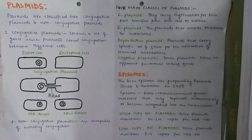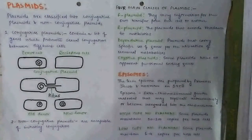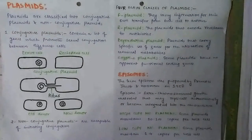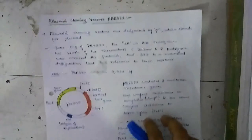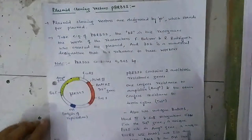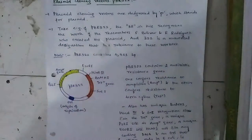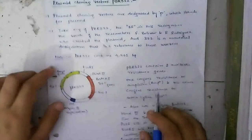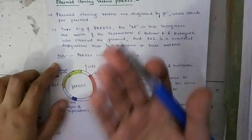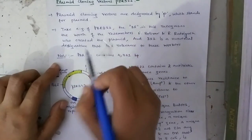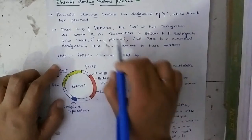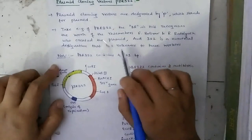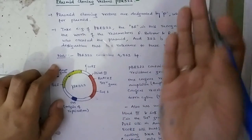The two commonly used plasmids are PBR322 and PUC18. Plasmid cloning vectors are designated by 'P', which stands for plasmid. In PBR322, 'BR' stands for the work of researchers Bolivar and Rodriguez who created this plasmid, and '322' is a numerical designation relevant to their work.